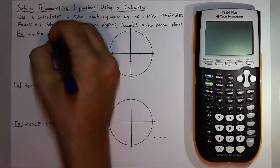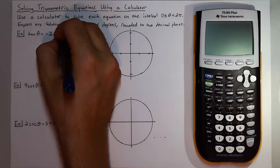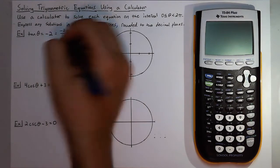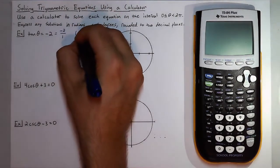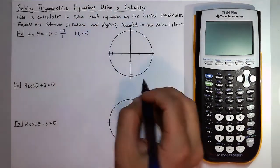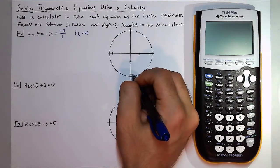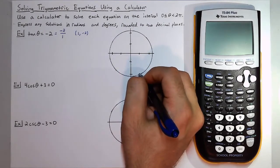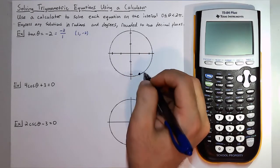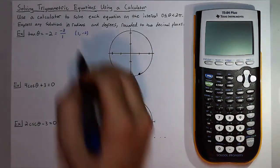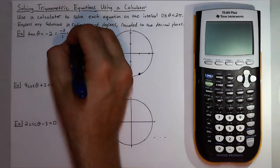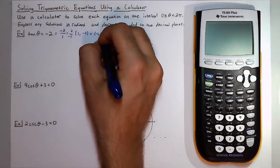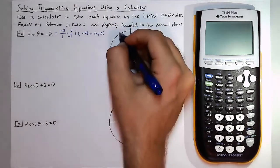Now to help visualize where this is at, tangent is often known as y over x. So if we think of negative two over one we can kind of think of the point one comma negative two as one of the locations. It could have also been thought of as two over negative one, so the points negative one comma two even up here.